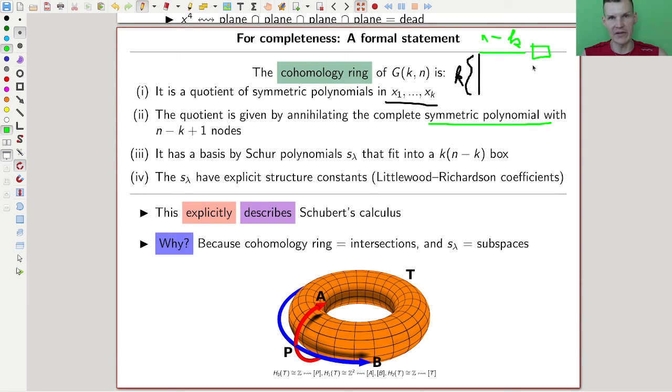You can write down the bases that correspond exactly to the subspaces you would like to intersect, and these are called the Schubert polynomials, not going to write them down how they work, but they're explicit formulas, they're schematic polynomials given for lambda, a partition that fits into this little box, so something that fits into the box, or whatever. And they're very explicitly, you can write them down very explicitly, and they are very explicitly can be multiplied, they have explicit structure constants.